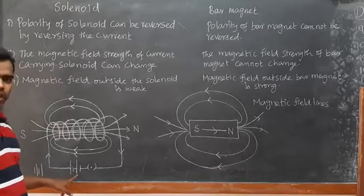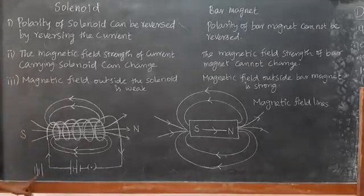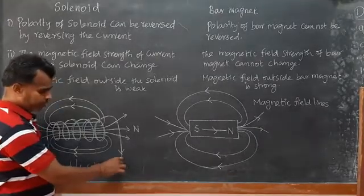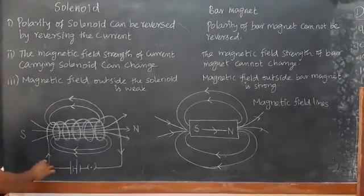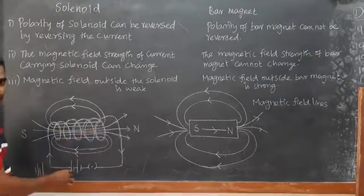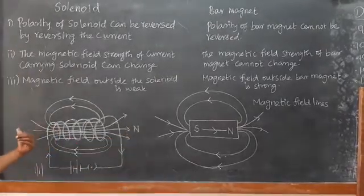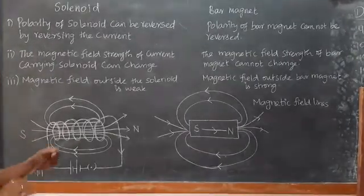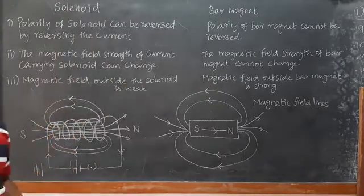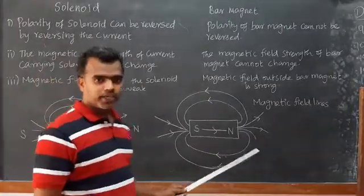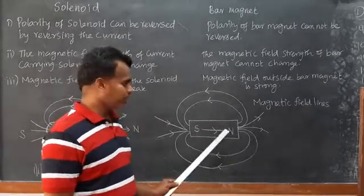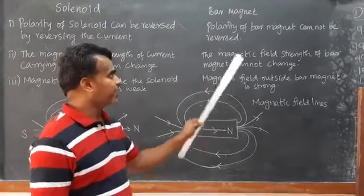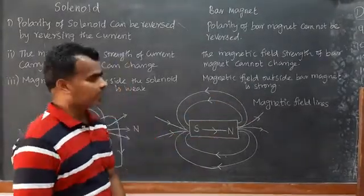Here positive is positive and negative is negative. Here negative becomes positive — so current direction is reversed, and the outcome is that the polarity becomes downward. The polarity of the solenoid can be reversed by reversing the current. But the polarity of a bar magnet cannot be reversed.